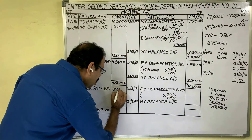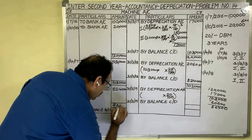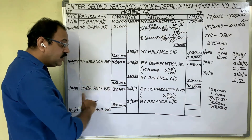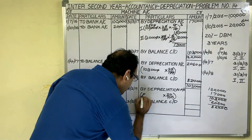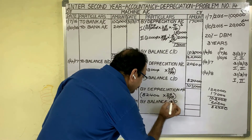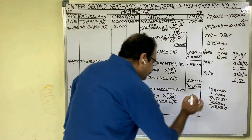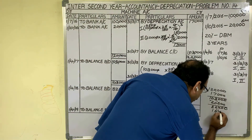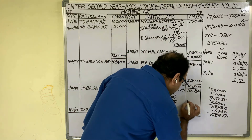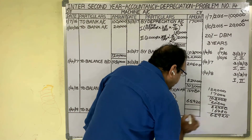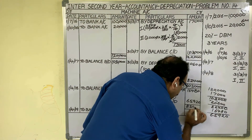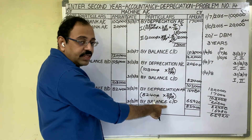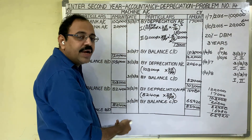Bring the balance to the third year. On 1st April 2018, To Balance Brought Down — 82,400. This is the opening balance of both assets at the start of the third year. On this value we can directly calculate depreciation, because in the third year also both assets are used for 12 months. On 82,400 at 20 percent: depreciation is 16,480. Debit total 82,400 minus 16,480 gives 65,920. Write on credit side: By Balance Carried Down — 65,920. Total is 82,400.